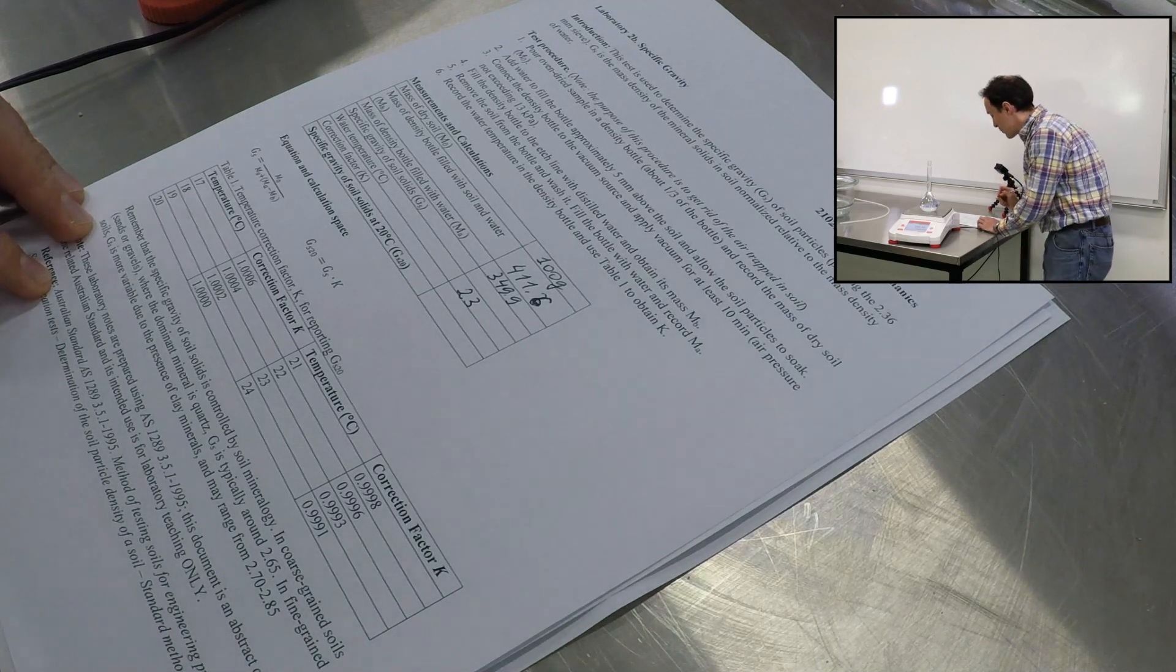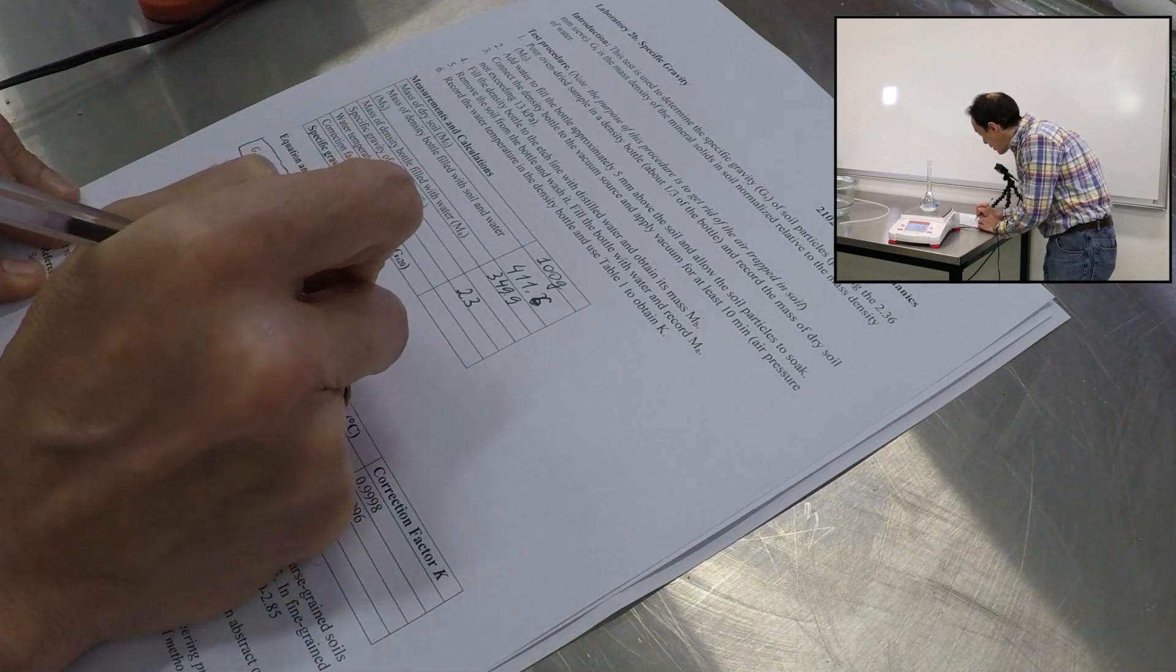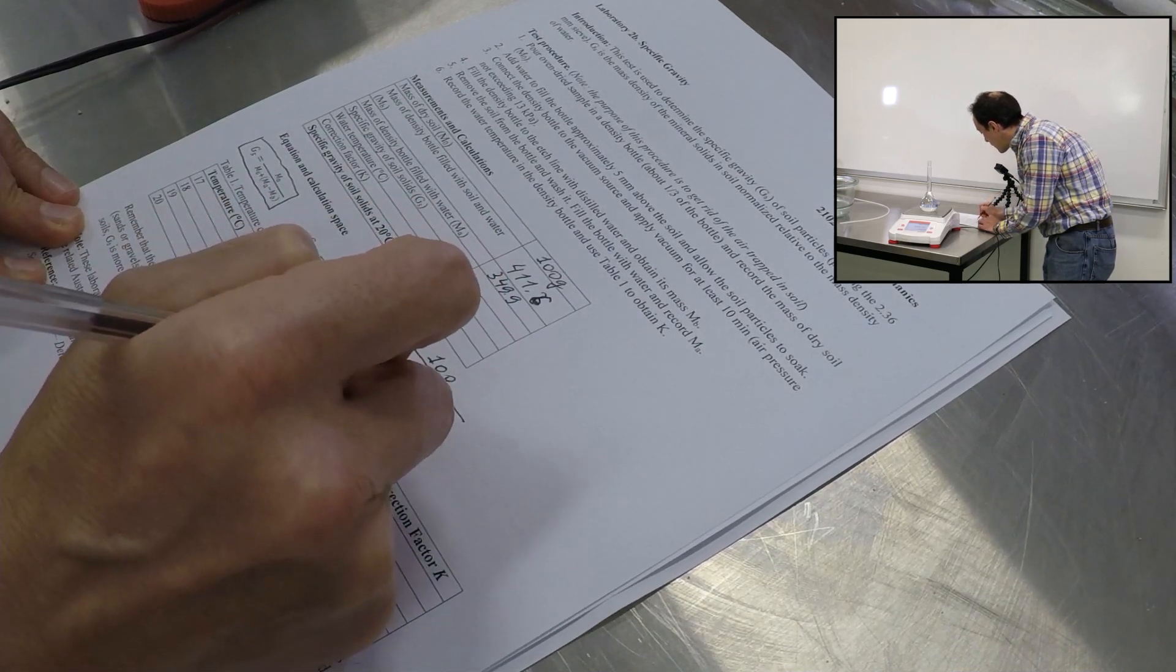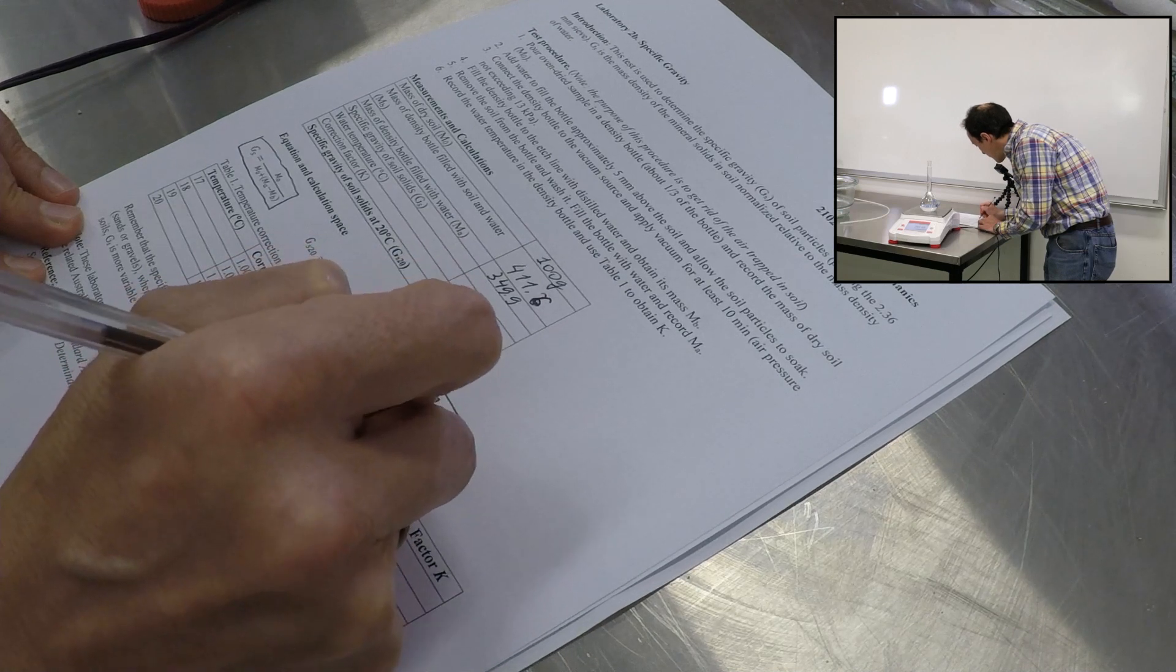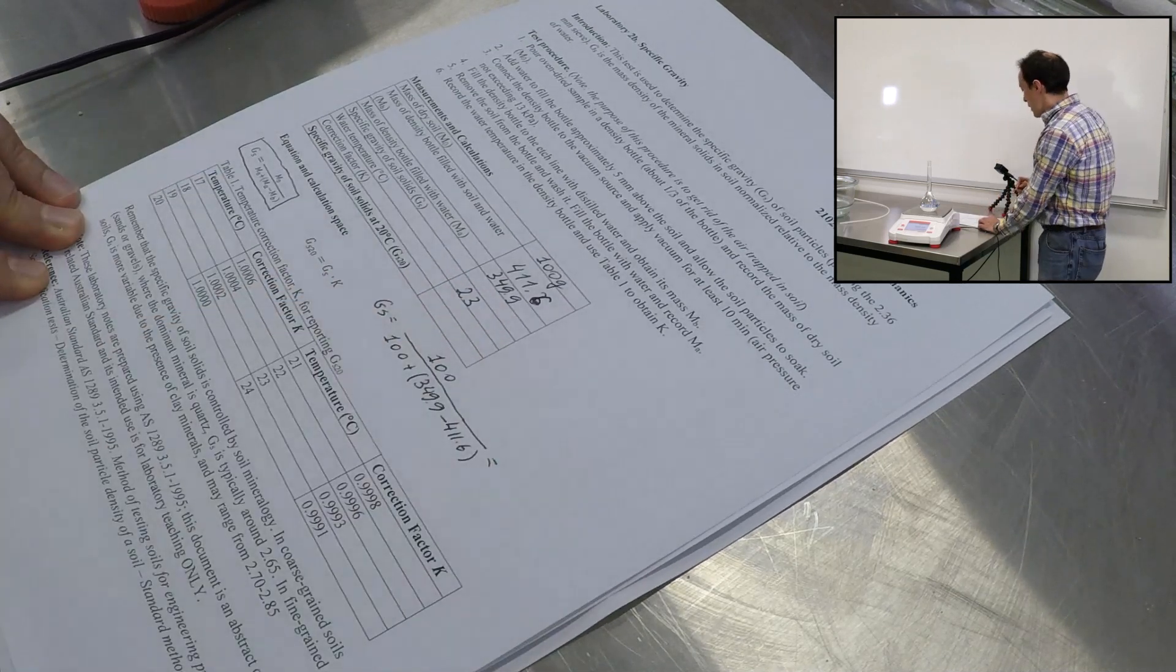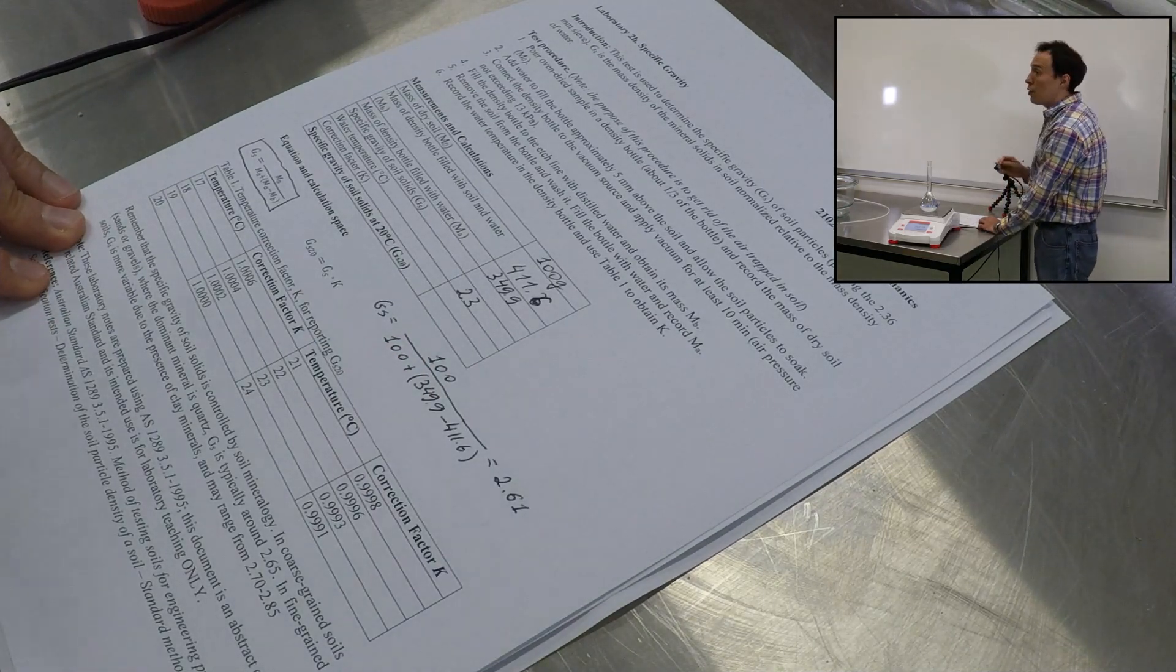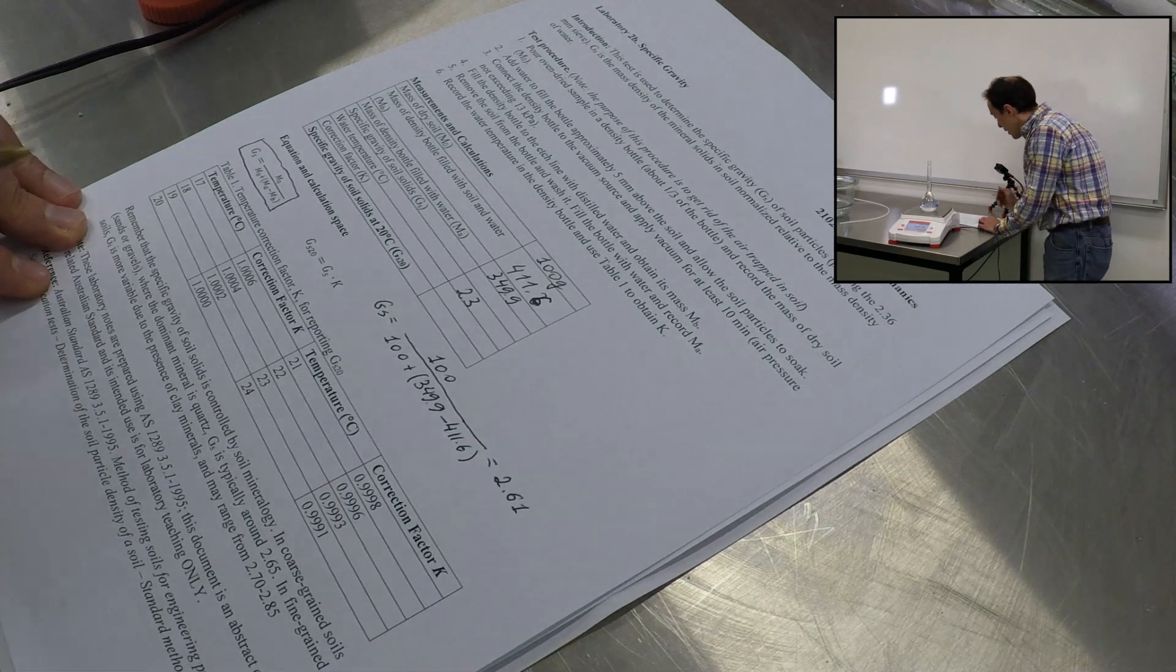What we'll do next is we'll calculate the specific gravity and we use this equation. I'll write it down in this paper. Specific gravity, it's mass of dry soil, which is 100 grams. Here we have 100 plus MA is 349.9 minus 411.6. Okay, so it's going to give us 2.61, which is a very good value. Specific gravity of soil typically ranges from 2.6 to 2.8, depending on the minerals in it.